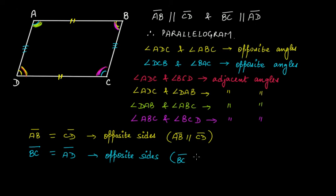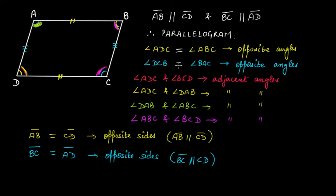So to summarize: opposite sides are equal and parallel to each other. Opposite angles are also equal to each other. Angle ADC equals angle ABC, and angle DCB equals angle DAB. So opposite sides are equal and parallel, and opposite angles are equal.